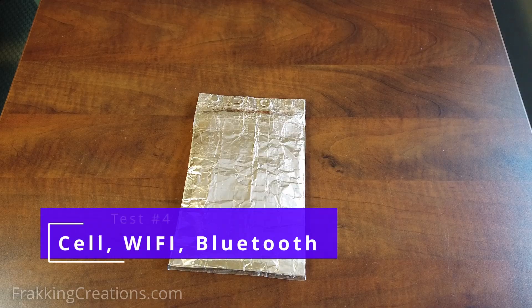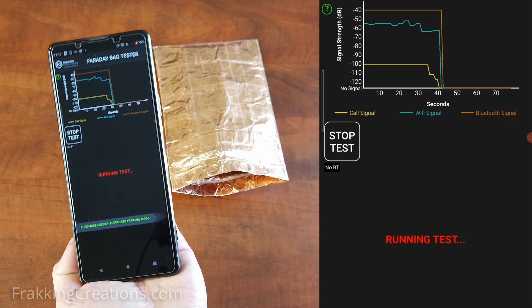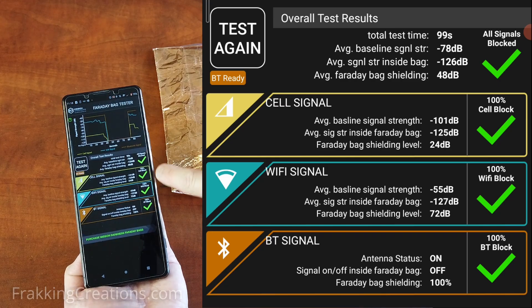The last test is to test the larger bag for blocking cell, wifi, and bluetooth signals. Here I use the Faraday bag tester app. Success! We can block all three signals using our Faraday bag.